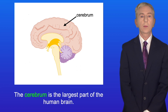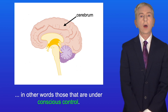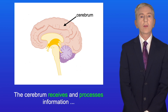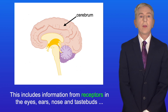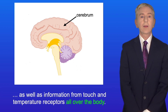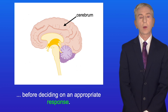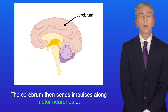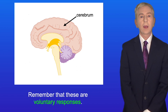The cerebrum is the largest part of the human brain. It coordinates the body's voluntary actions — those under conscious control. The cerebrum receives and processes information from sensory receptors, including information from receptors in the eyes, ears, nose, taste buds, as well as touch and temperature receptors all over the body. It compares this information with previous knowledge and learning before deciding on an appropriate response, then sends impulses along motor neurons triggering effectors to carry out these voluntary responses.